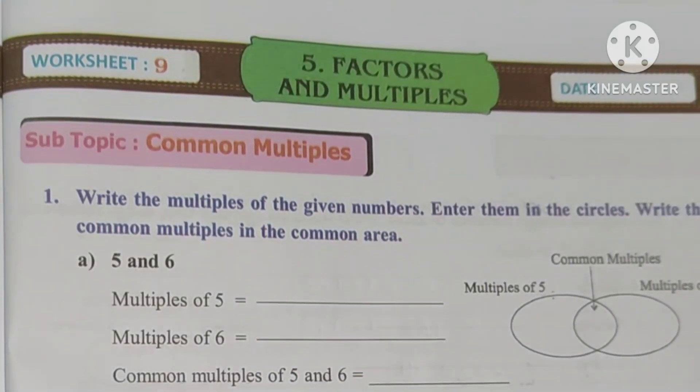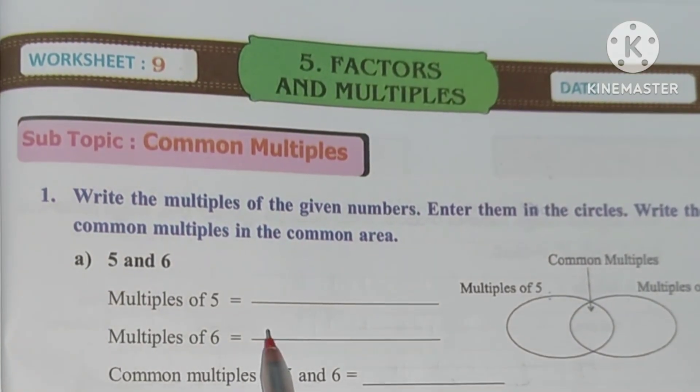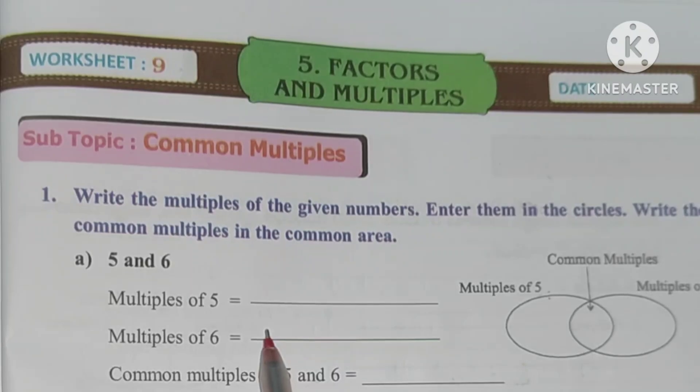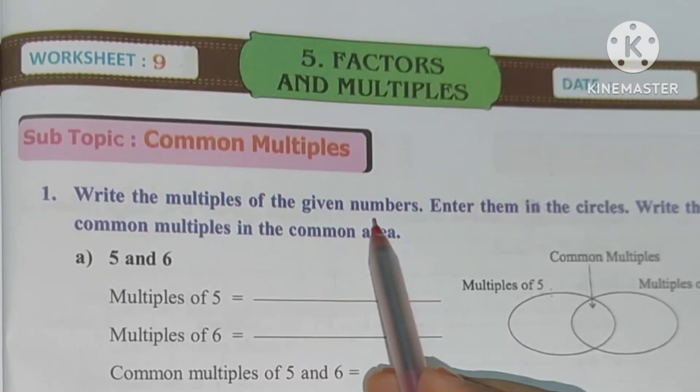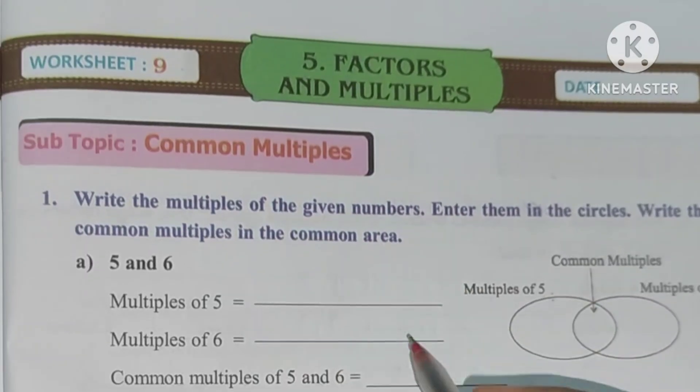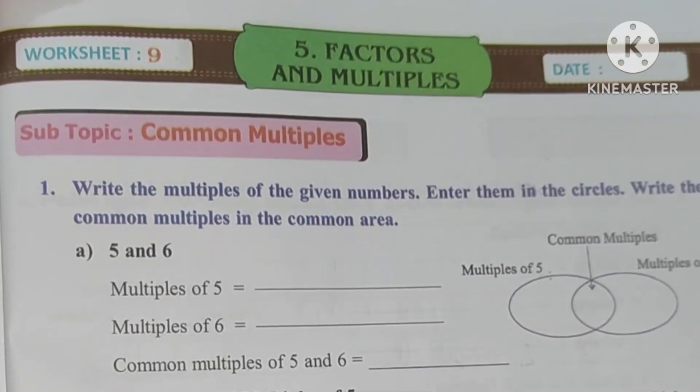So here, write the multiples of 5. This is the multiples of 5 and multiples of 6. We have minimum 10 multiples, we have the 5 table here, we have 10 times.